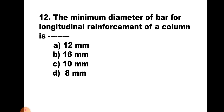Question number 12. The minimum diameter of bar for longitudinal reinforcement of a column is: A) 12 mm, B) 16 mm, C) 10 mm, or D) 8 mm. The minimum diameter of the bar to be used in a column is 12 mm. Hence the correct answer is A, 12 mm.